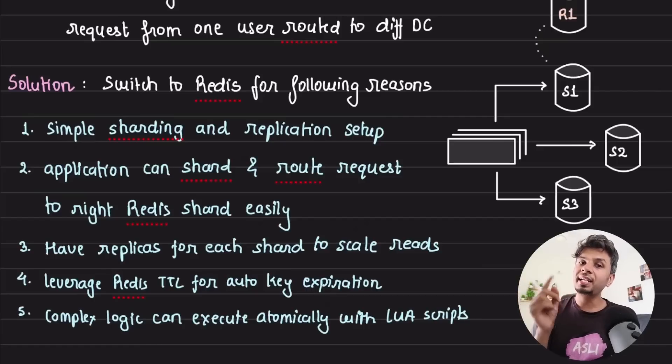Fourth is, because Redis has an inbuilt TTL, they wanted to leverage it to do auto expiration of keys, making it easier for them to do the cleanups of the dead cache keys or dead rate limiting keys that they were having.